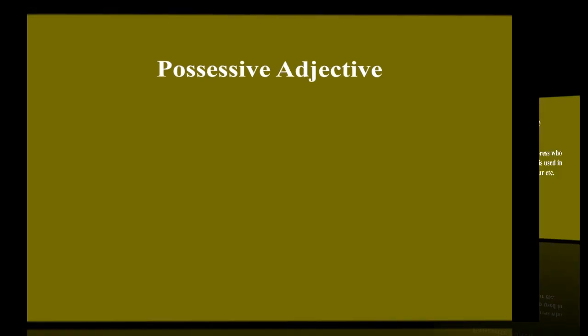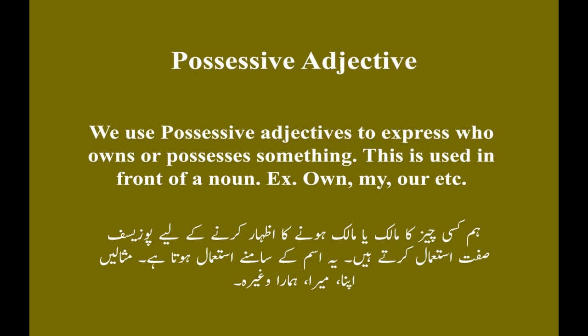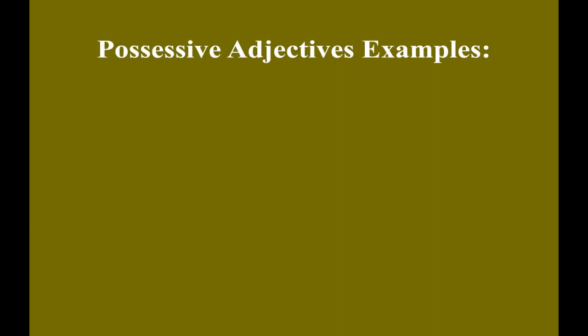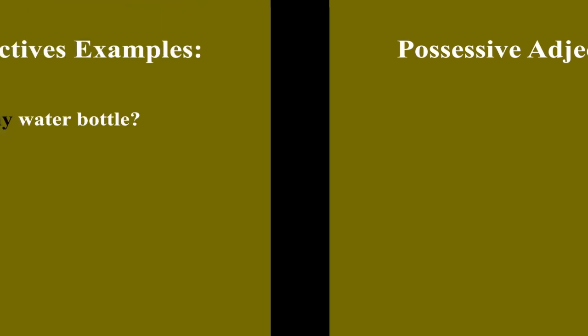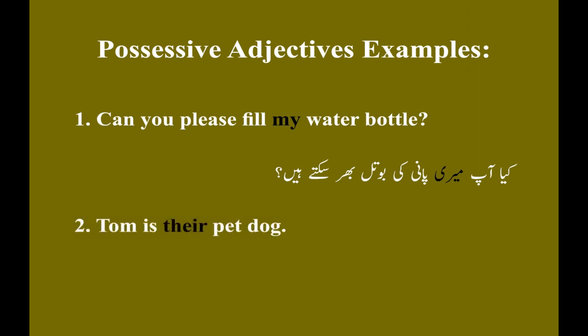Possessive adjective. We use possessive adjectives to express who owns or possesses something. This is used in front of a noun. Examples: own, my, our, etc. Example number one: Can you please fill my water bottle? Kya aap meri paani ki bottle bhar sakte hain? Example number two: Tom is their pet dog. Tom unka palta kutta hai.